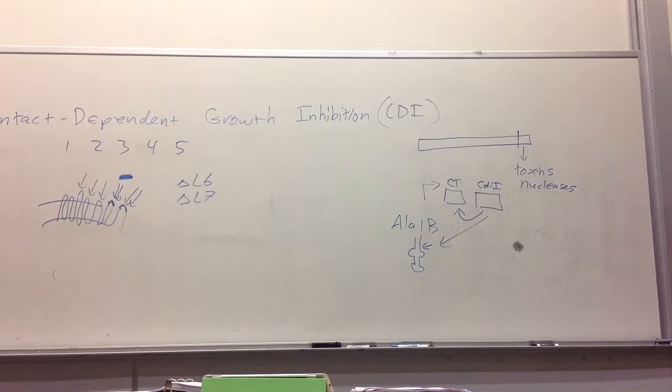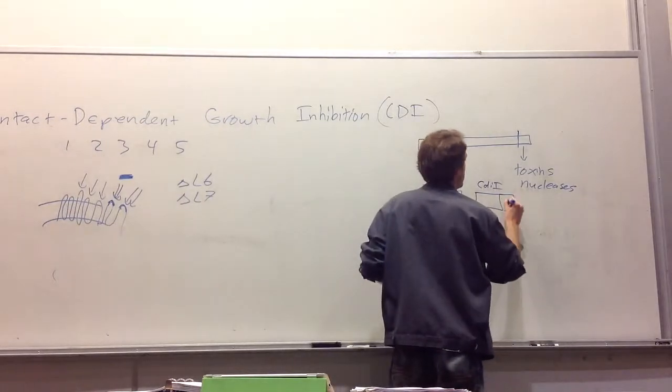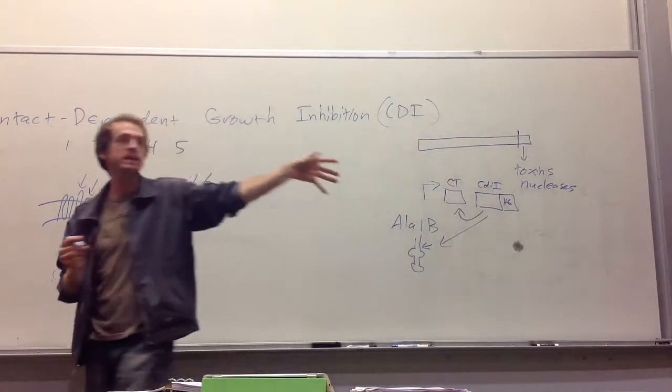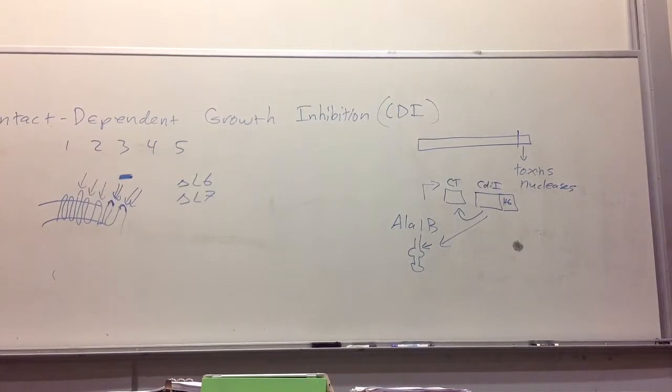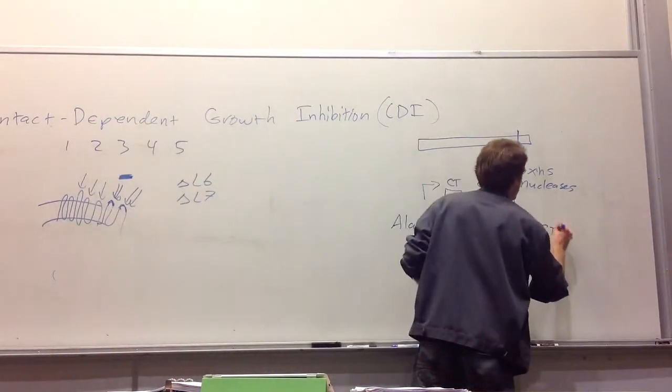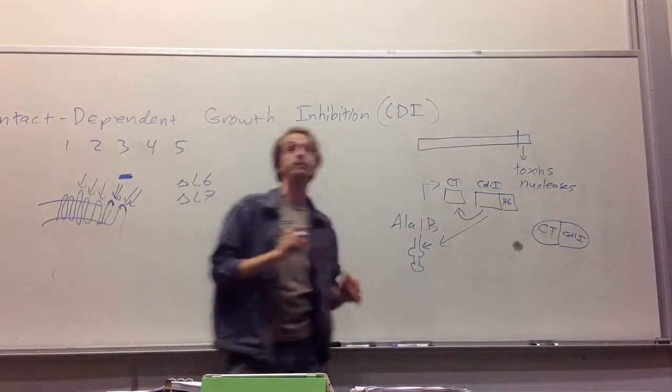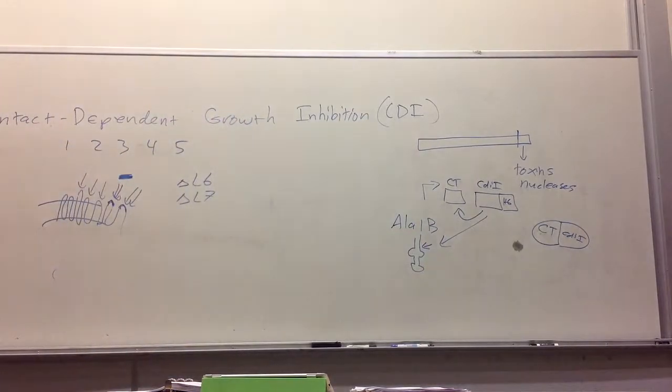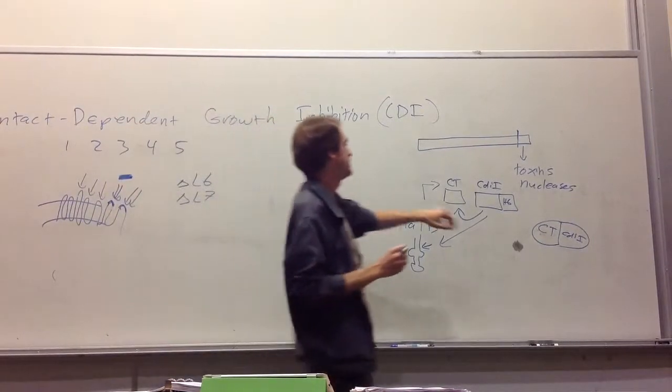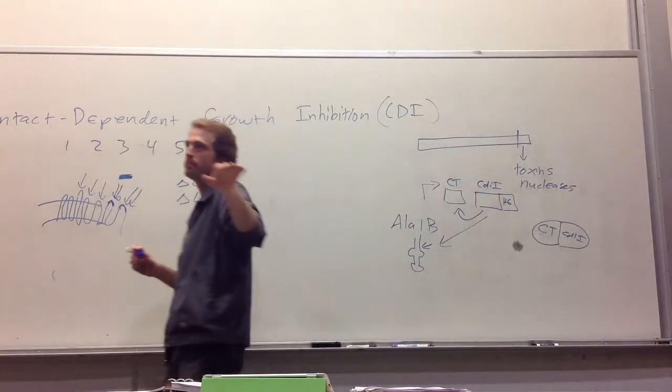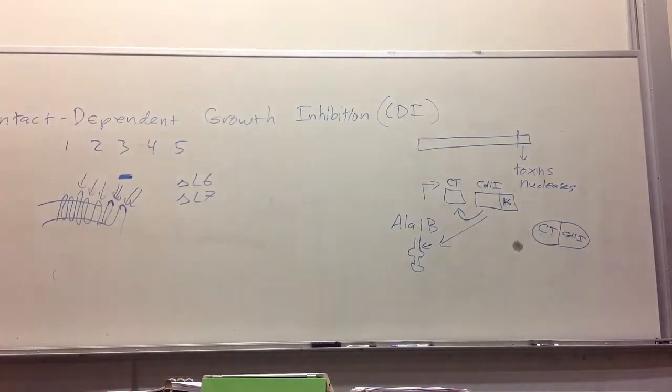Similar assay to what we did over here. We'll put a little His tag on this guy. We can express these, we can pull out CdiI, see what's bound to it. It turns out that these guys, the CT and the immunity protein, bind very, very tightly. Nanomolar affinity, sometimes femtomolar. On the order of the biotin-streptavidin interaction. Two orders of magnitude stronger than antibody-antigen interactions. Pretty much the strongest non-covalent binding you can get are these kinds of interactions. They bind really tightly.